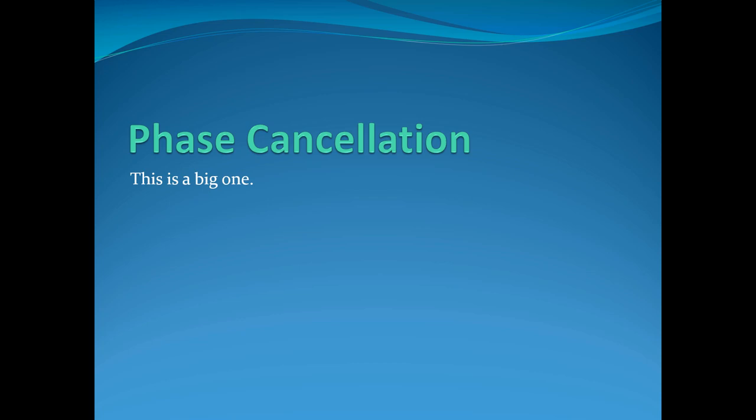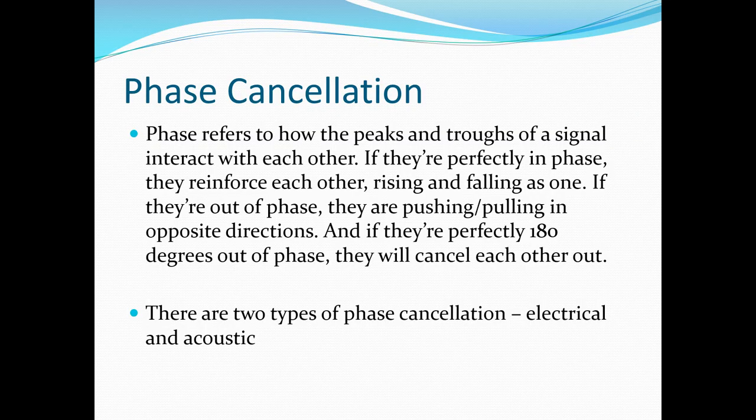Now let's talk about phase cancellation. This is a big issue and will plague you for the rest of your lives while recording. Phase refers to how the peaks and troughs of a signal interact with each other. If two waveforms rise and fall perfectly in phase, they reinforce each other. If they're out of phase, one might be pushing while the other is pulling in opposite directions. If you have an identical waveform exactly 180 degrees out of phase, the end result is total silence — although this is extremely rare. There are two types to worry about: electrical cancellation and acoustic.